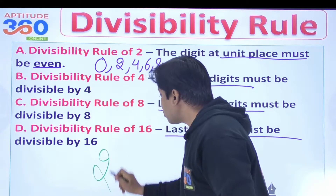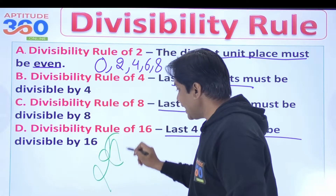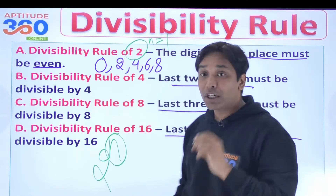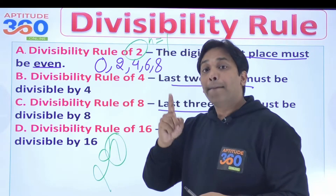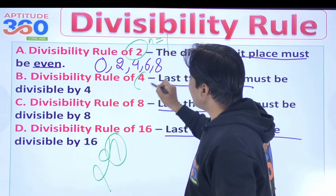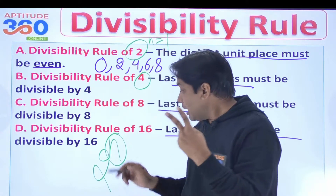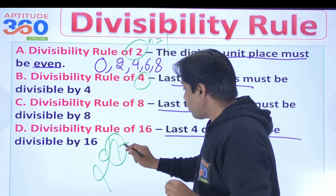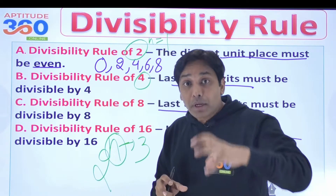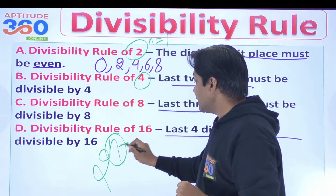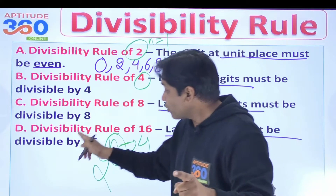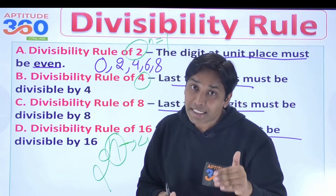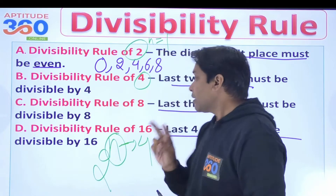This is the rule of 2 to the power n. When n is 1, you get 2 — the last 1 digit must be divisible by 2. When n is 2, you get 4 — the last 2 digits must be divisible by 4. When n is 3, you get 8 — the last 3 digits must be divisible by 8. When n is 4, you get 16 — the last 4 digits must be divisible by 16. So 2, 4, 8, and 16 all come from 2 to the power n.